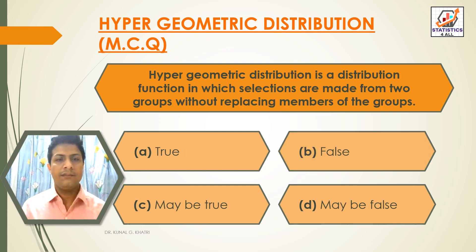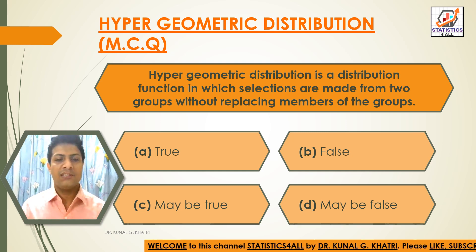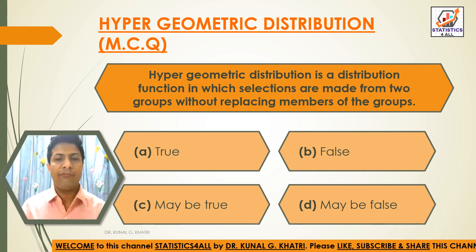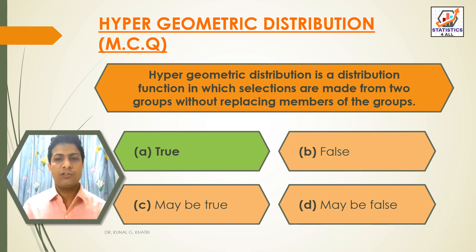Next question: Hypergeometric distribution is a distribution function in which selections are made from two groups without replacing members of the groups. Option A: True, Option B: False, Option C: May Be True, Option D: May Be False. The answer is Option A — True.